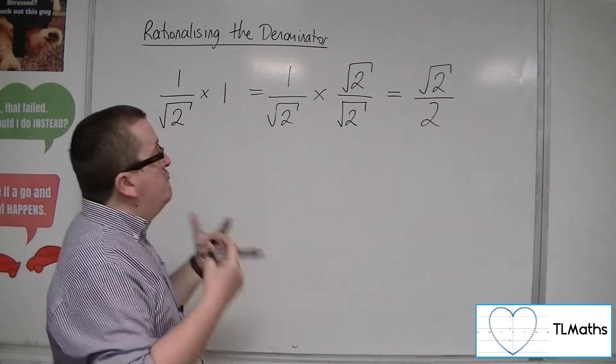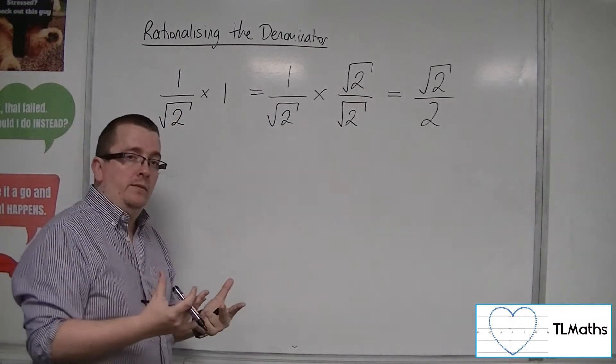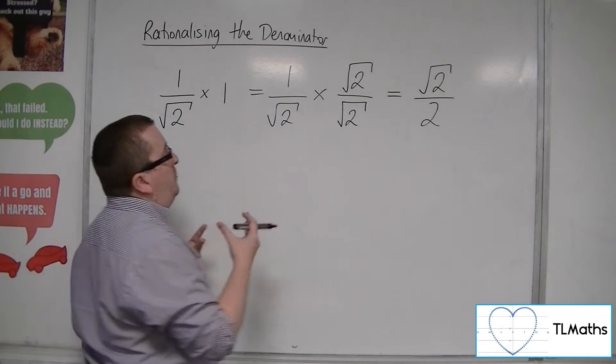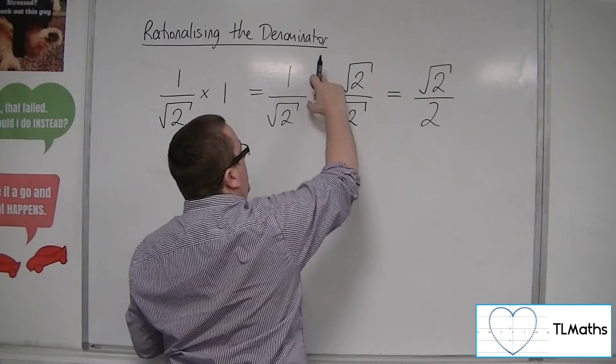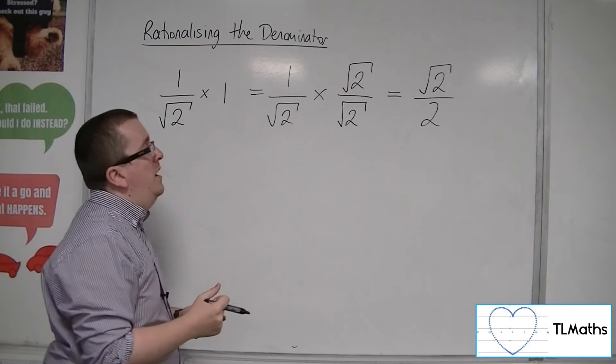So I have rationalized the denominator just by multiplying both numerator and denominator by the same amount.